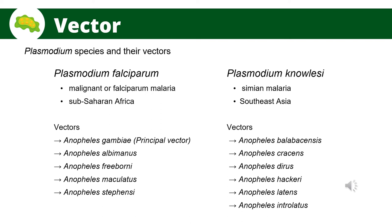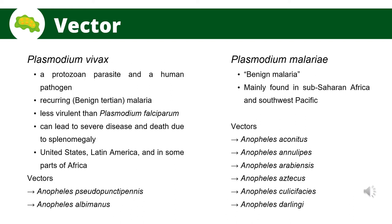Plasmodium knowlesi was originally known to cause simian malaria, and human knowlesi infections have been reported in nearly all countries in Southeast Asia. Its vectors are Anopheles balabacensis, Anopheles cracens, Anopheles dirus, Anopheles hackeri, Anopheles latens, and Anopheles introlatus.